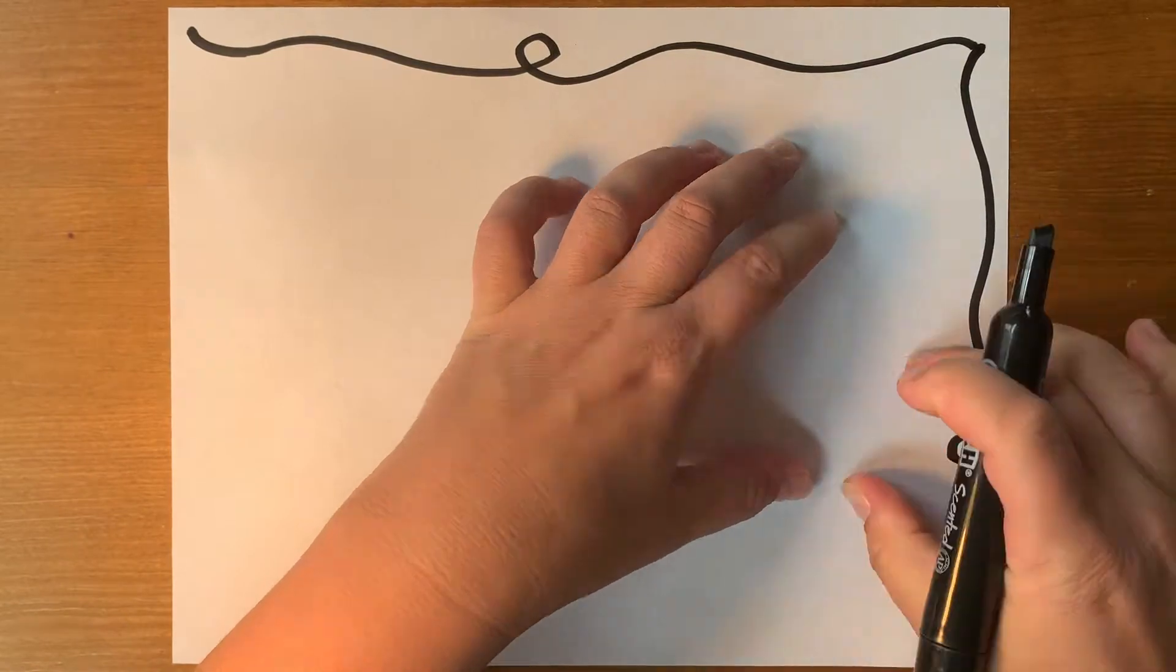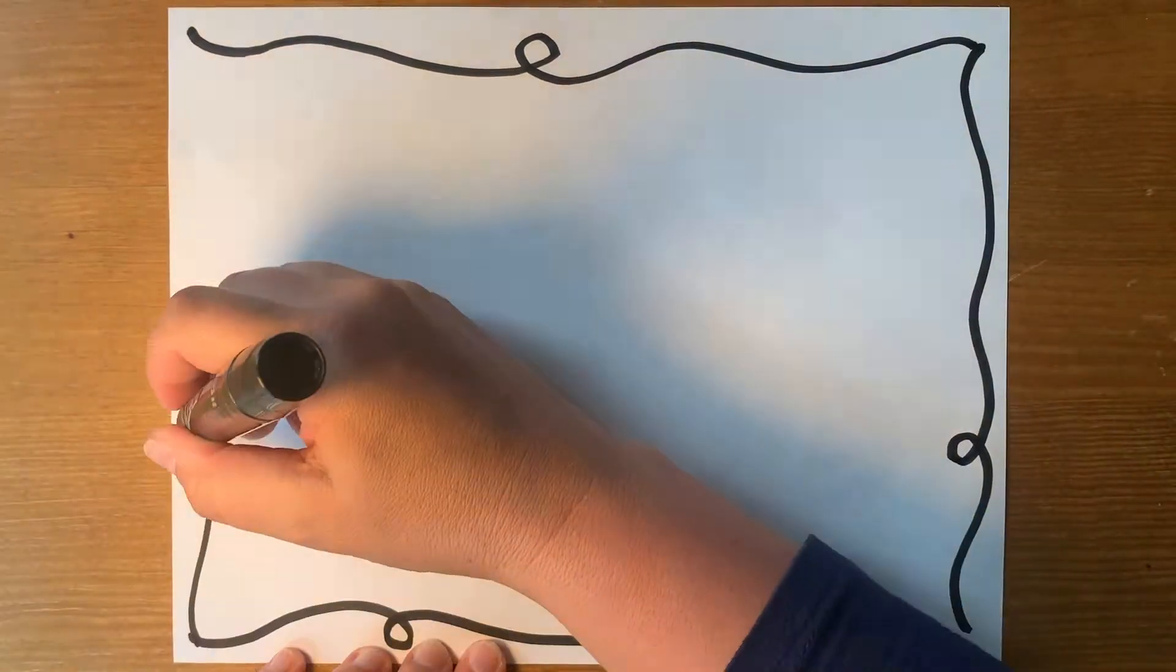First, draw a border. It can be straight, wiggly, zig-zaggy, whatever you like.